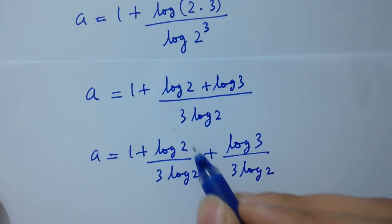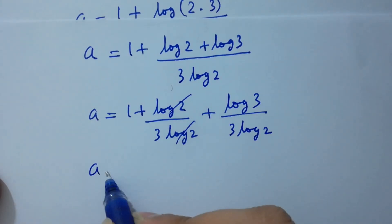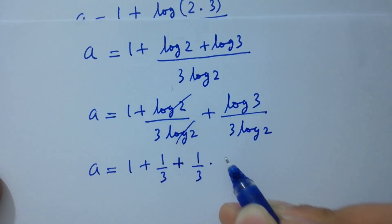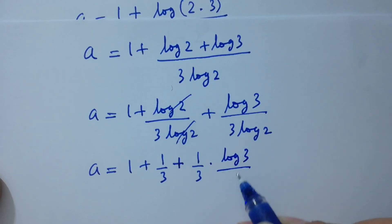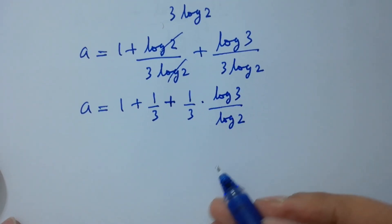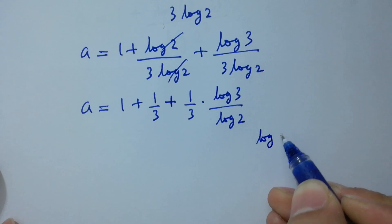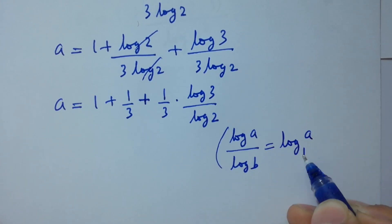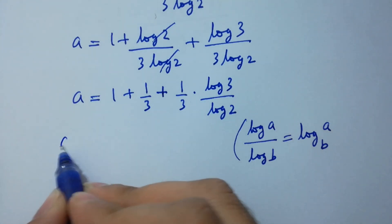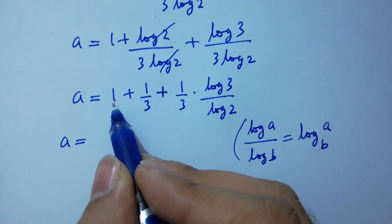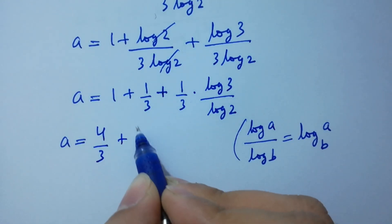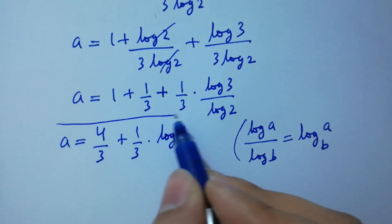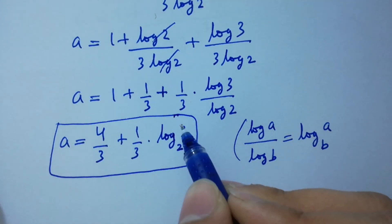Log 2 and log 2 cancel, giving a equals 1 plus 1 over 3 plus (1 over 3) times (log 3 over log 2). Since log a over log b equals log a to the base b, a equals 1 plus 1 over 3, which is 4 over 3, plus (1 over 3) times log 3 to the base 2. This is the value of a.